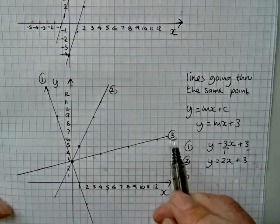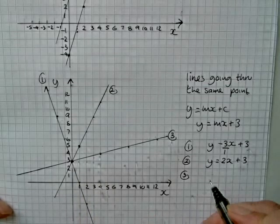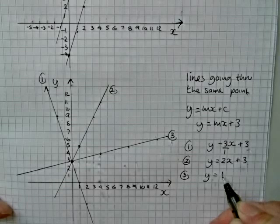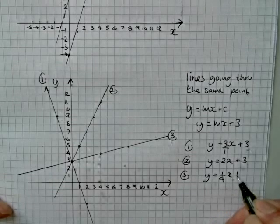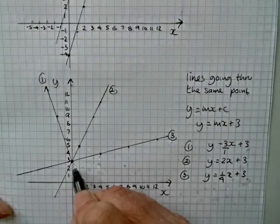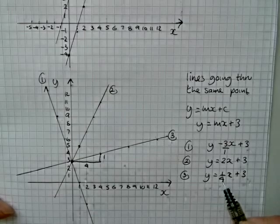And then if I do line three, this is a fractional gradient. We've gone across four to go up one. So we've got a quarter x, quarter x plus three. Again, just to show you that quarter, we're going up one across four, and that's why it's a quarter.